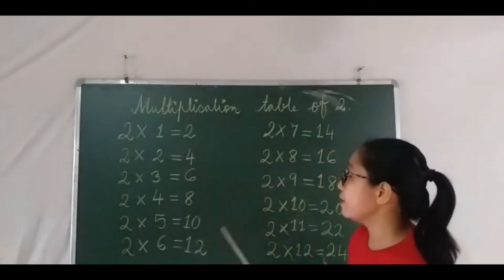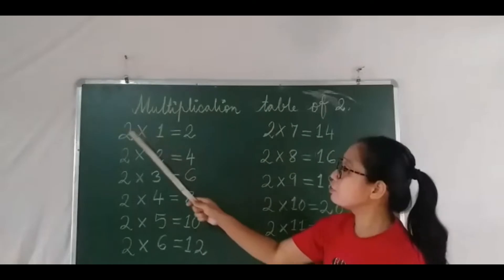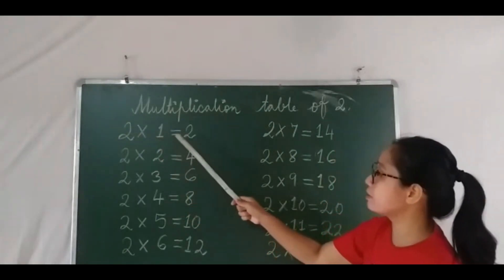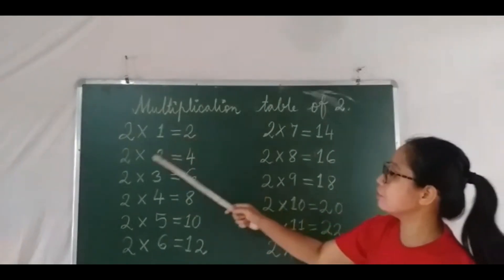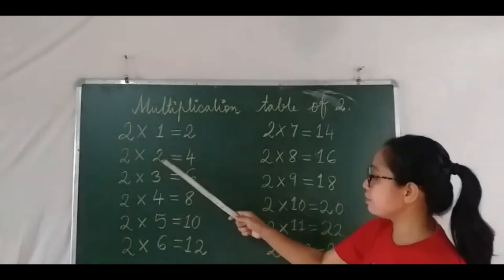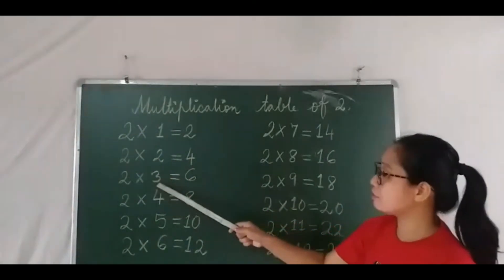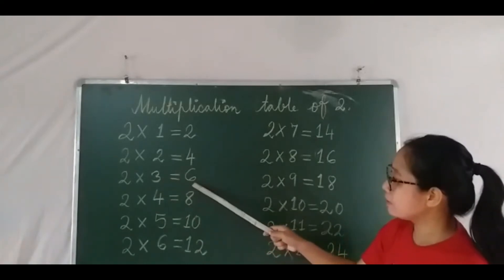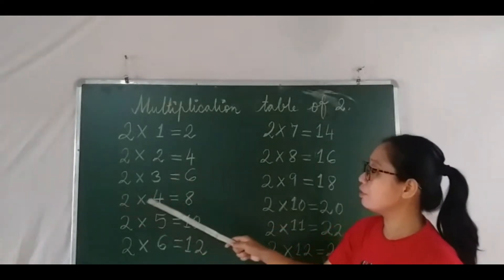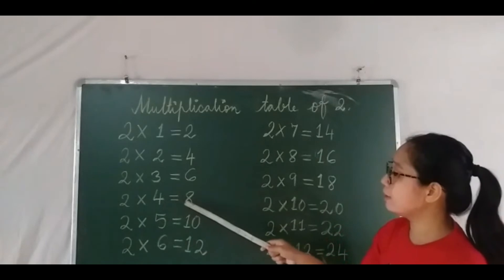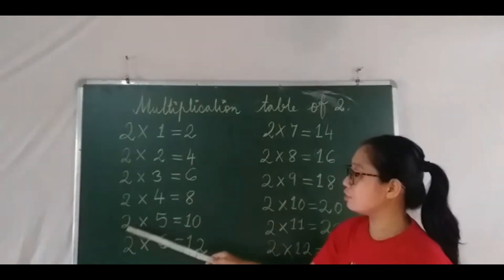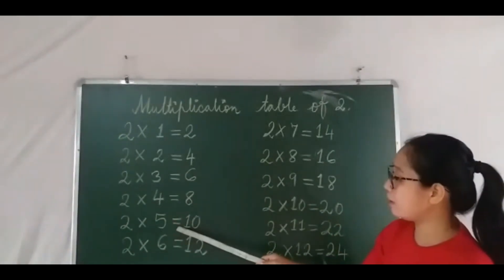Two ones are two, two twos are four, two threes are six, two fours are eight, two fives are ten.